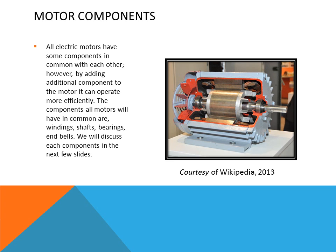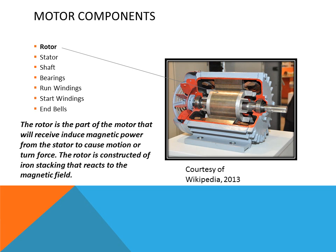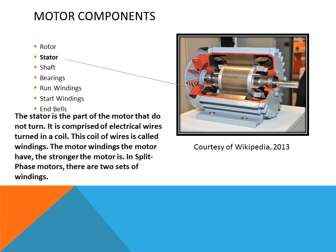In this cutaway of the motor, you can see some of the components exposed from the motor being cut open to show the internal components. The rotor is the part of the motor that rotates. It is made of iron stackings that will receive the magnetic field or induced magnetic field from the stator. The stator is stationary and is where the windings of the motor are connected.